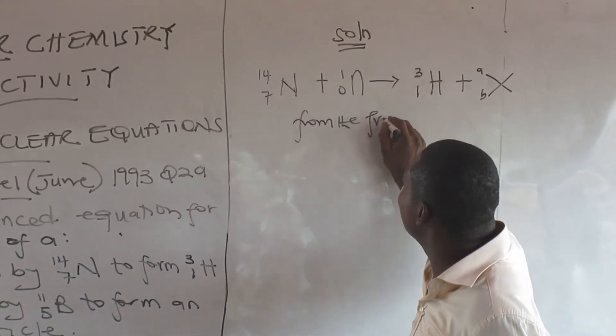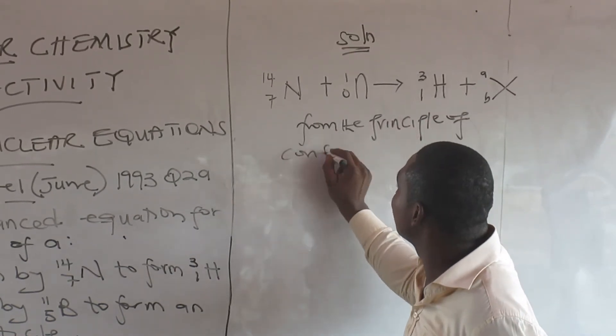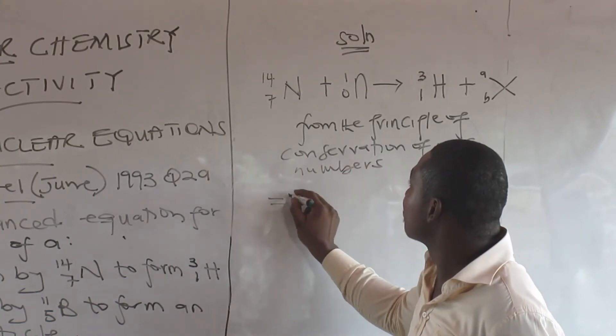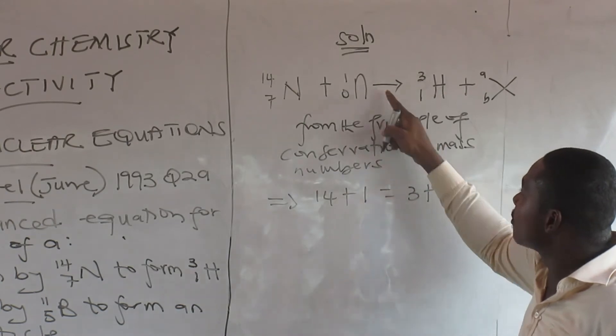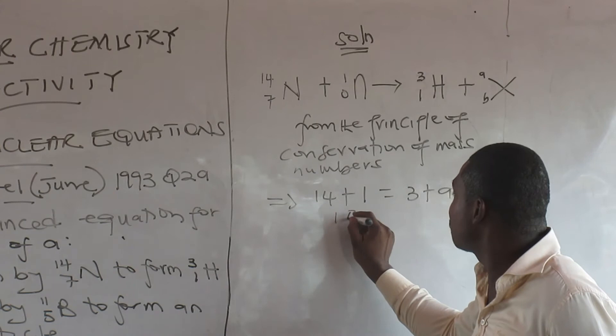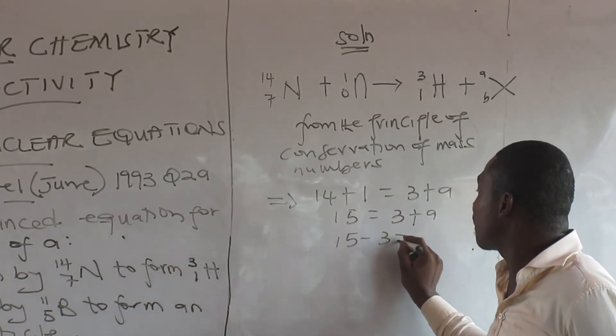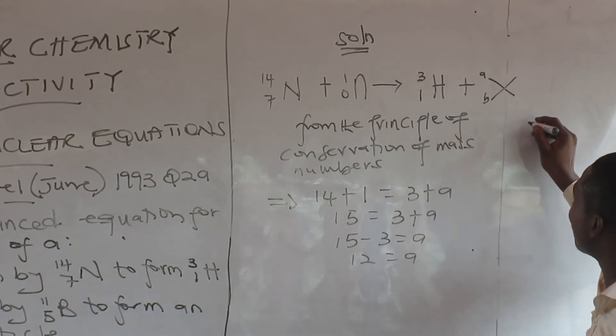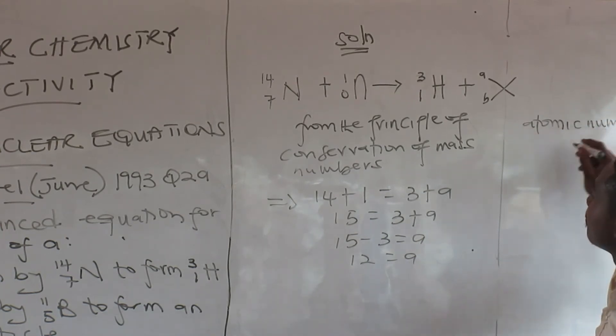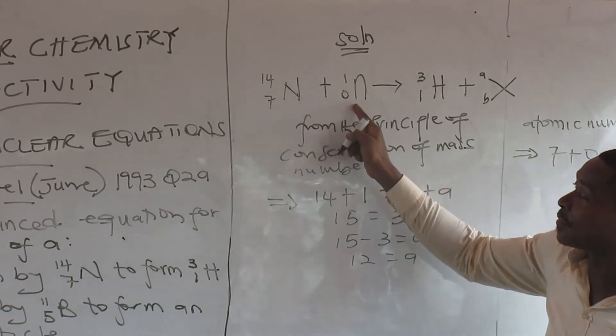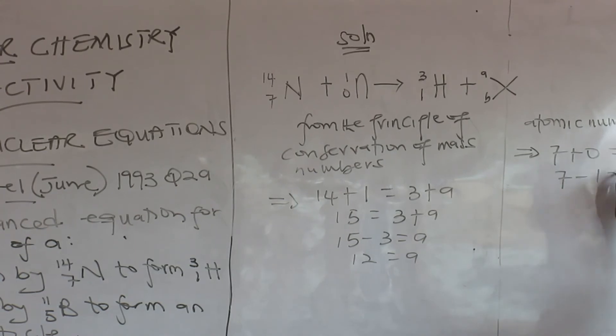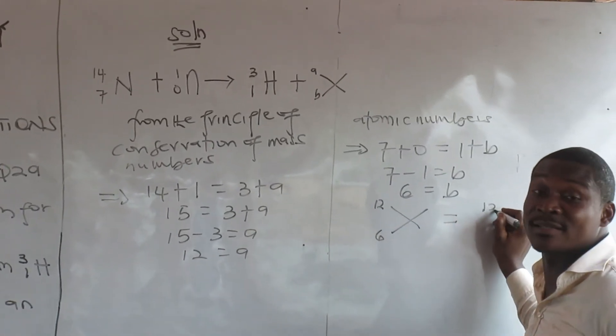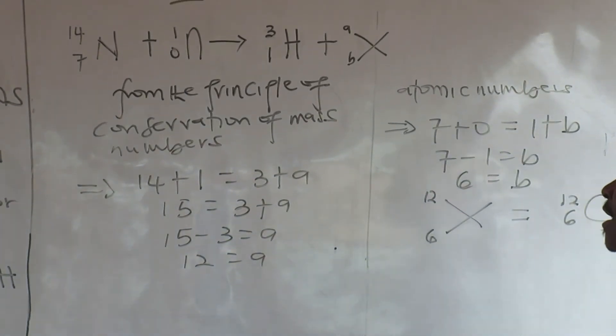So from the principle of conservation of mass numbers, it follows that 14 plus 1 equals 3 plus A. So this arrow is tantamount to an equality. So 15 equals 3 plus A. So you have 15 minus 3 equals A. 12 equals A. So have A. Now, let's look at B. So from the principle of conservation of atomic numbers, comparing atomic numbers, we have 7 plus 0 equals 1 plus B. So 7 minus 1 equals B. That is 6 equals B. So X happens to be 12, 6. Now, which element is this? That is carbon. Now, let's balance the equation as required. So this has a neutron. This plus 12 6 carbon. It is what we call balanced. Let's check. The total masses here, we have 15. The total masses here is 15. Total atomic number is 7. Total 7. Balanced.